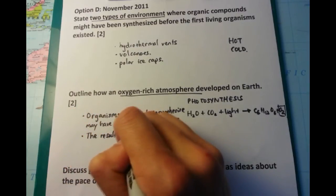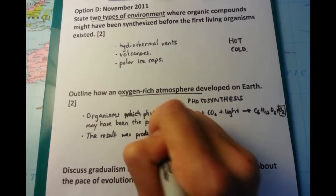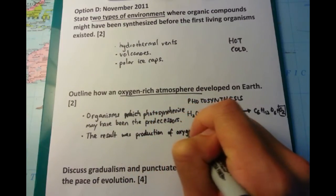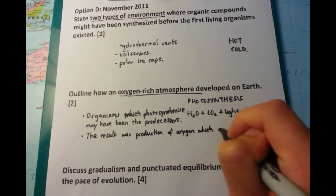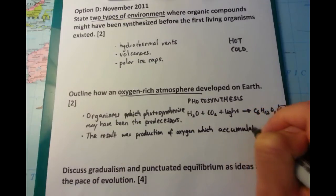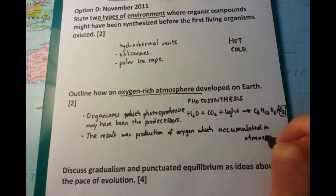you need to talk about where the source of the oxygen is. It comes from organisms who are producers. Then you need to talk about that this oxygen continues to accumulate.